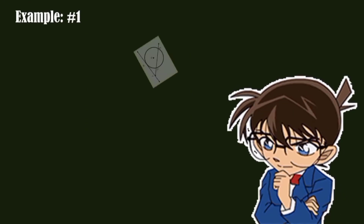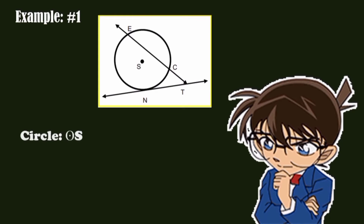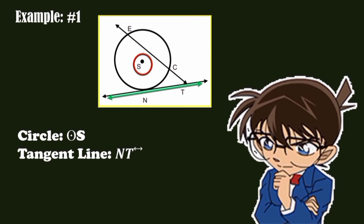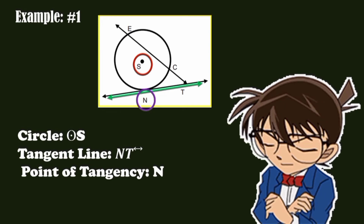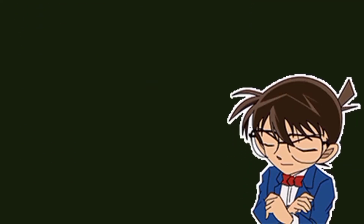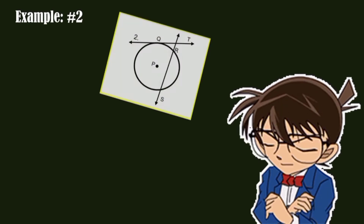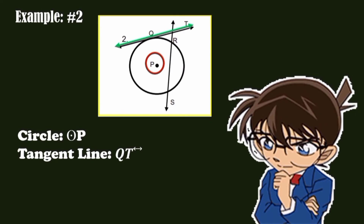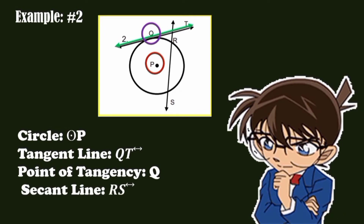Example number one. Look at the given illustration. This is Circle S. The tangent line is line NT. The point of tangency is point N, because this is where the tangent line hits the circle. Secant line: Line EC. Example number two. Look at the illustration. This is Circle P. Our tangent line is line QT. The point of tangency is point Q. And our secant line is line RS.